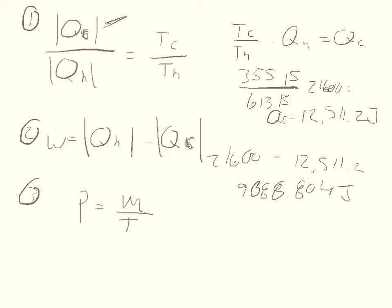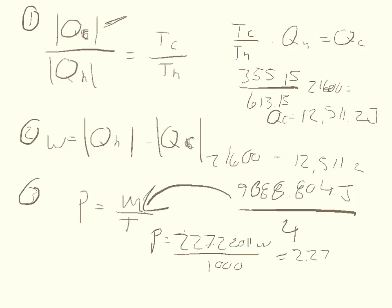Now we just divide that by the change of time, which was four seconds. The power output equals 2,272.201 watts. We want the answer in kilowatts rather, so we divide that by 1,000 to convert from watts to kilowatts. That equals 2.272201 kilowatts.